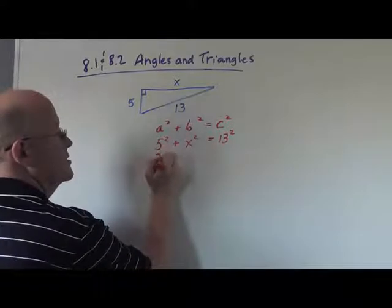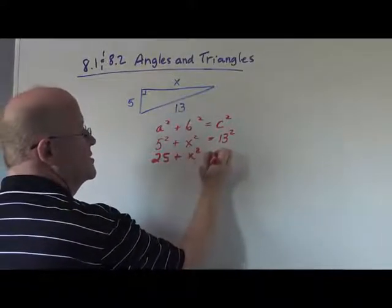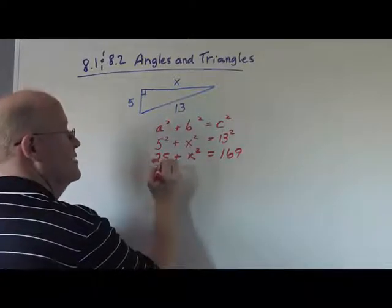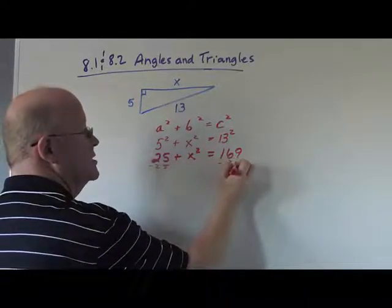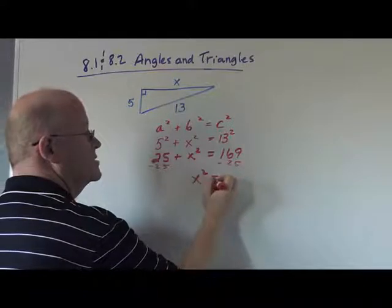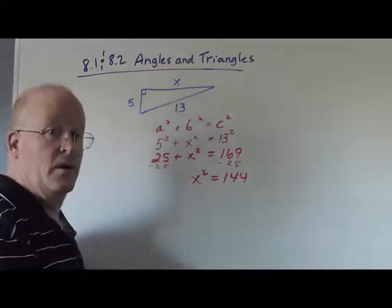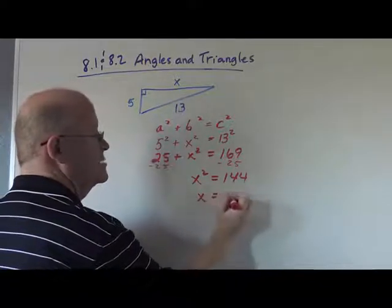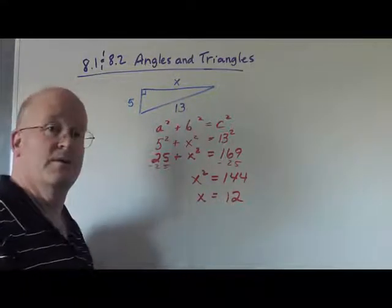5 squared is equal to 25 plus this x squared is equal to 169. And if we subtract 25 on each side of this equation, we find out that x squared is equal to 144. Square rooting each side of the equation, we then have x is going to equal 12 units long.